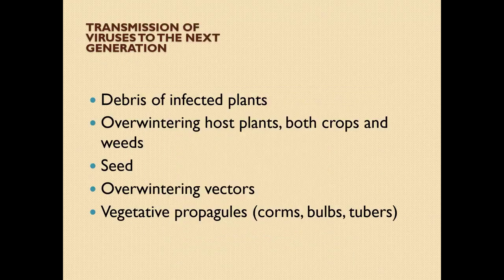Transmission of viruses to the next generation can happen through the debris of infected plants, overwintering host plants — both crops and weeds — seed, overwintering vectors, and vegetative propagules such as corms, bulbs, and tubers.